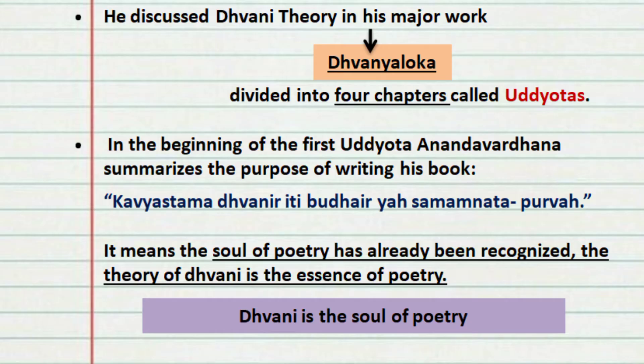In the beginning of the first Udyodha, Anandavardhana summarizes the purpose of writing Dhvanyaloka. He says: 'Kavyasthama Dvanir Ithi Bhudherya Samanyadha Purva.' This means that the soul of poetry has already been recognized — the theory of Dhvani is the essence of poetry. So, Dhvani is the most important element in poetry; Dhvani is the soul of poetry.